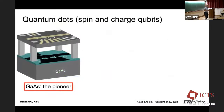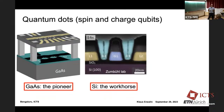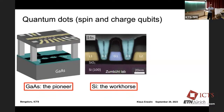Gallium arsenide is the pioneer — where many basic quantum dot features have been investigated — all the readout schemes we use today. They started about 20 years ago. GaAs is a very clean system; almost anything you would like to implement, you actually can. Silicon is now the workhorse because it's compatible with industry. Silicon has weak spin-orbit interaction and can be isotopically purified to get rid of nuclear spins.